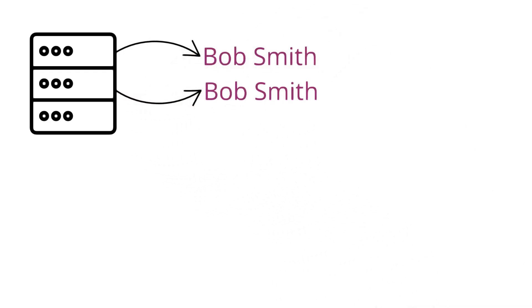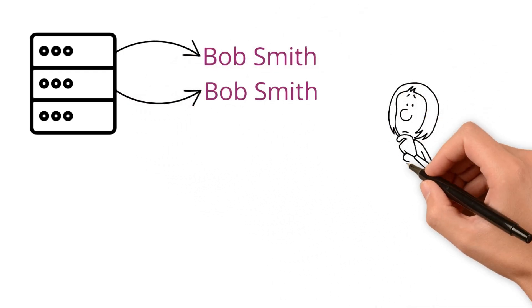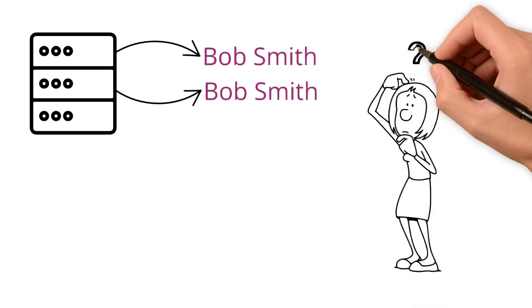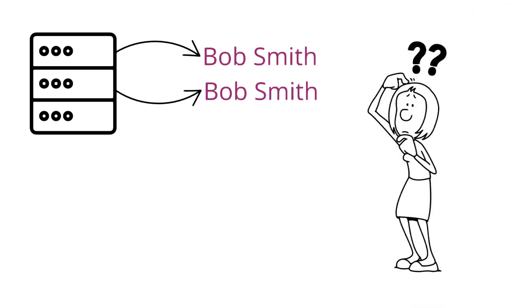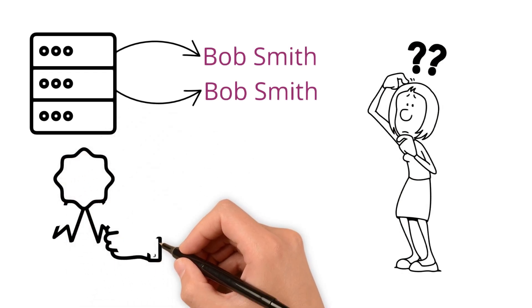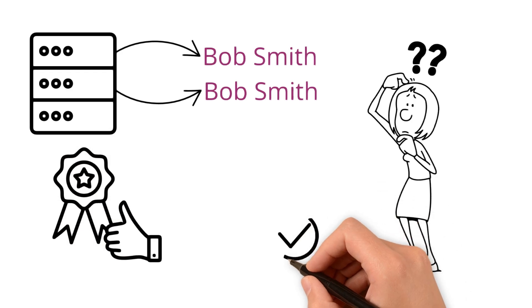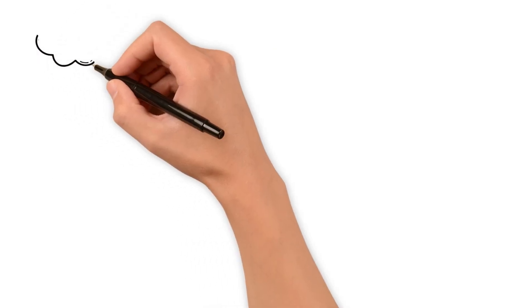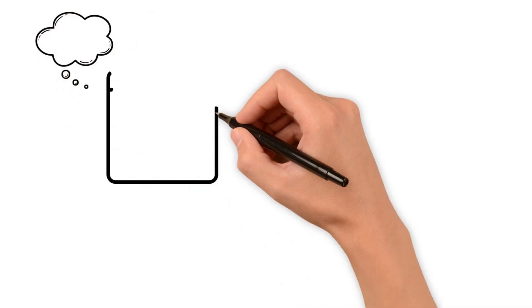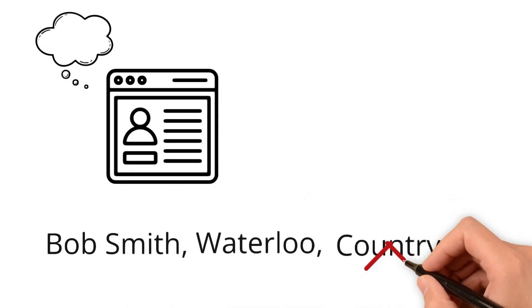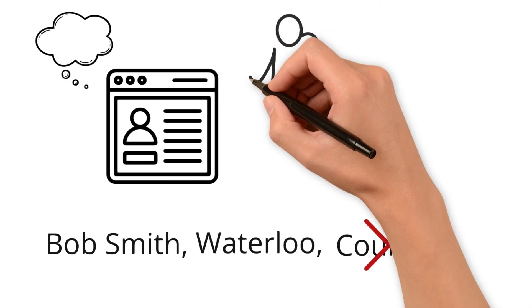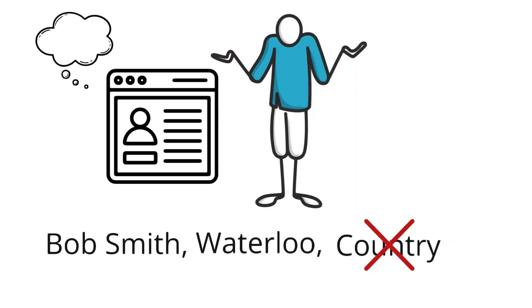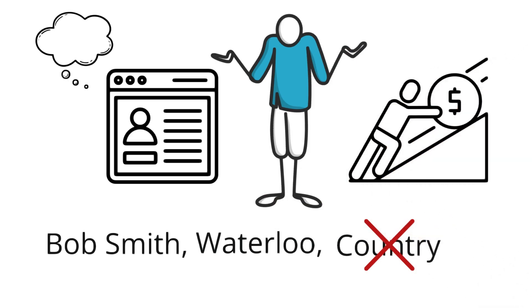Say for instance, you see the name Bob Smith twice in your database. Are there really two individuals out there? Or did someone mistakenly enter it more than once? High quality data helps to eliminate such uncertainties, ensuring that each entity is represented uniquely and correctly. Similarly, imagine you have a customer record that says Bob Smith, Waterloo. Without knowing the country, is the data complete? Not really. That way, it's not easy to figure out if your data is reliable or not.